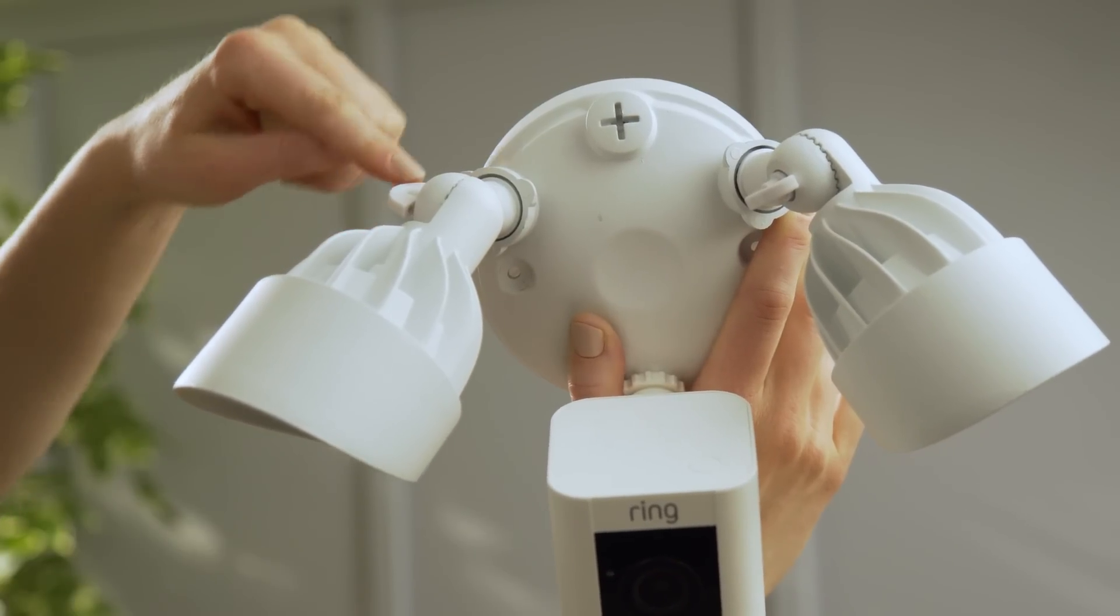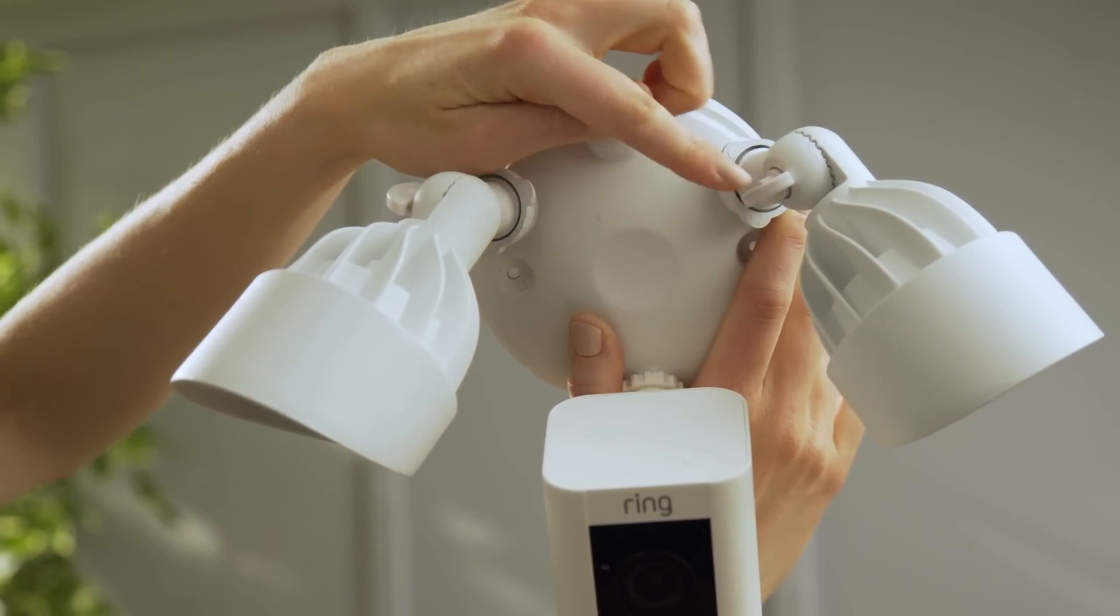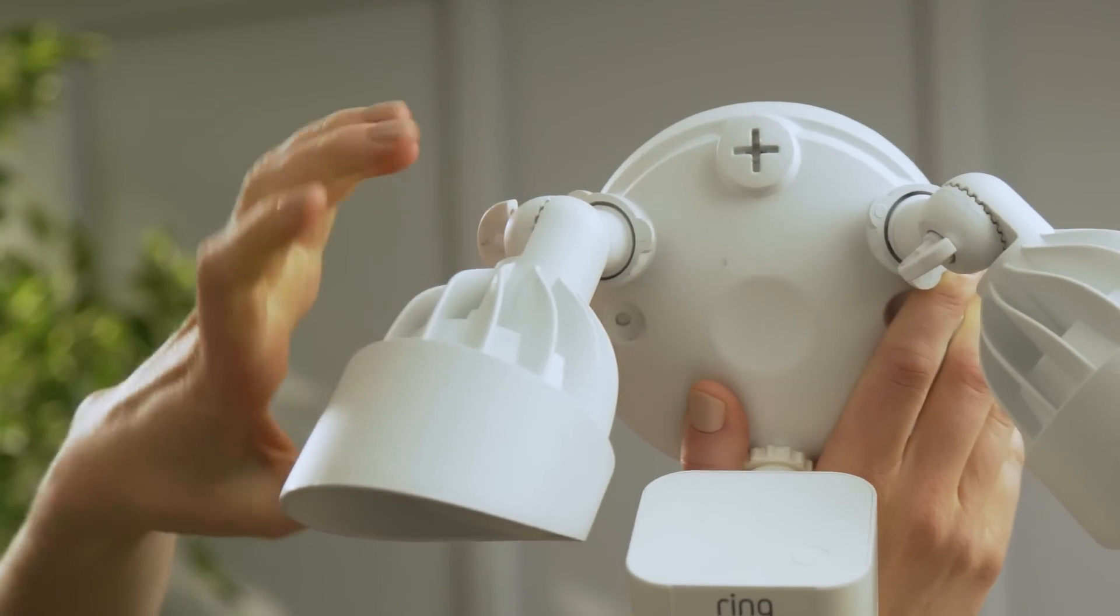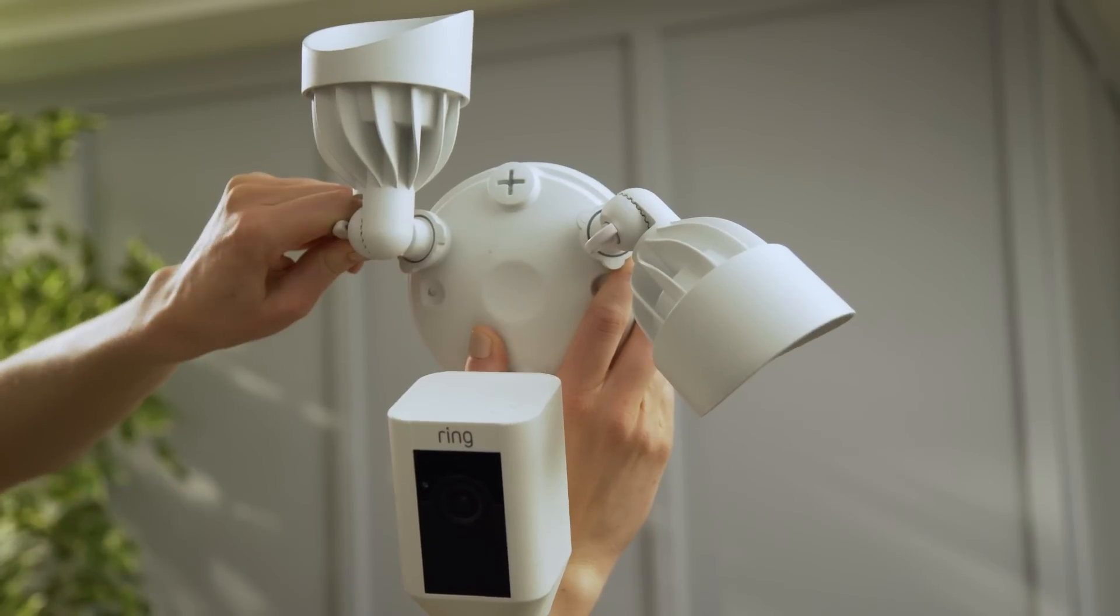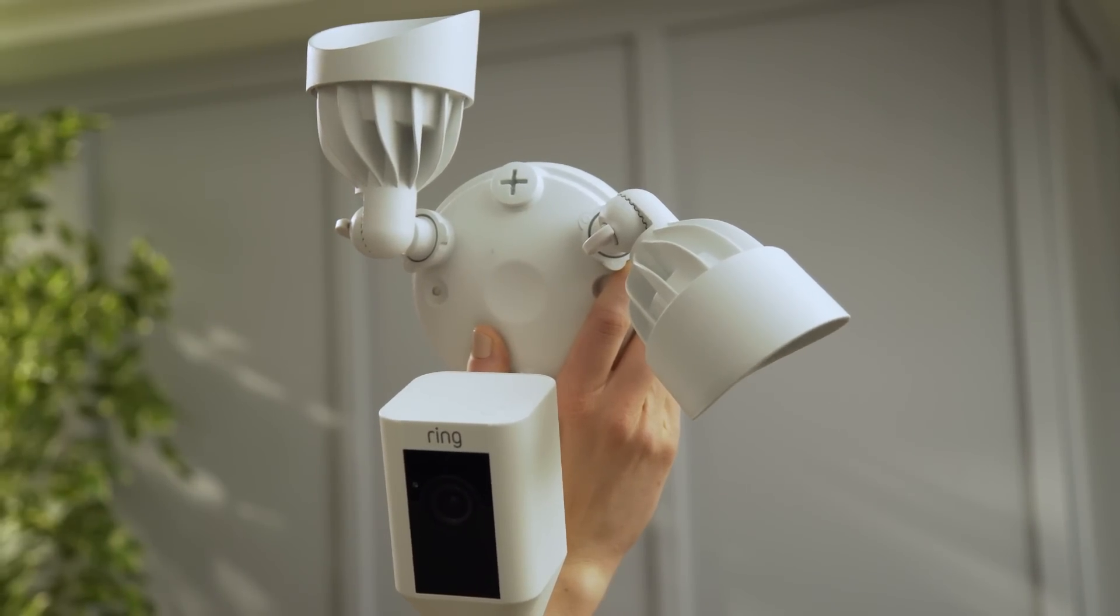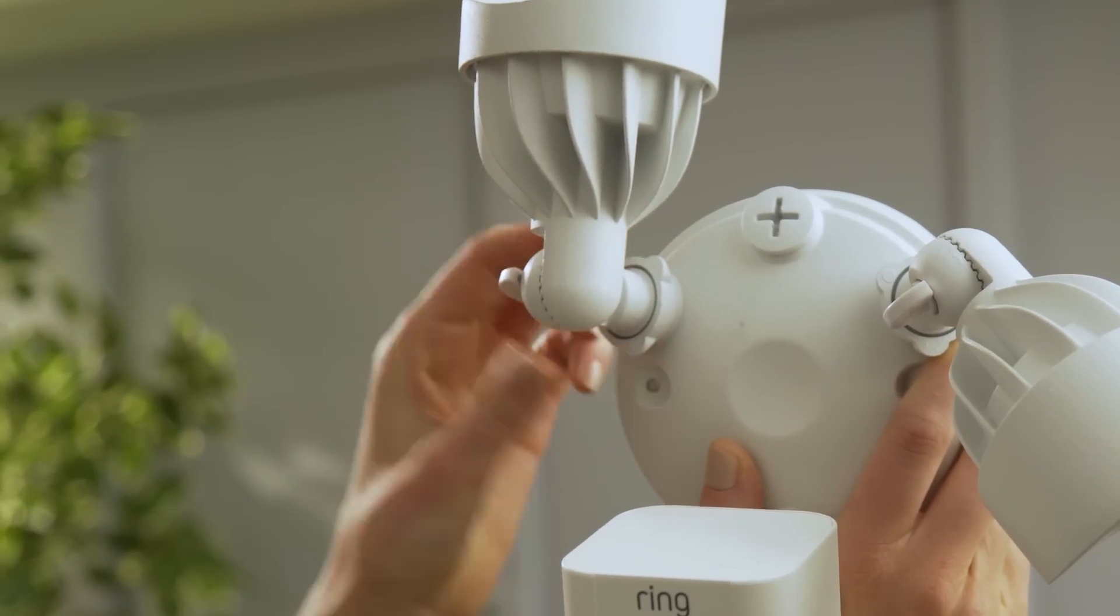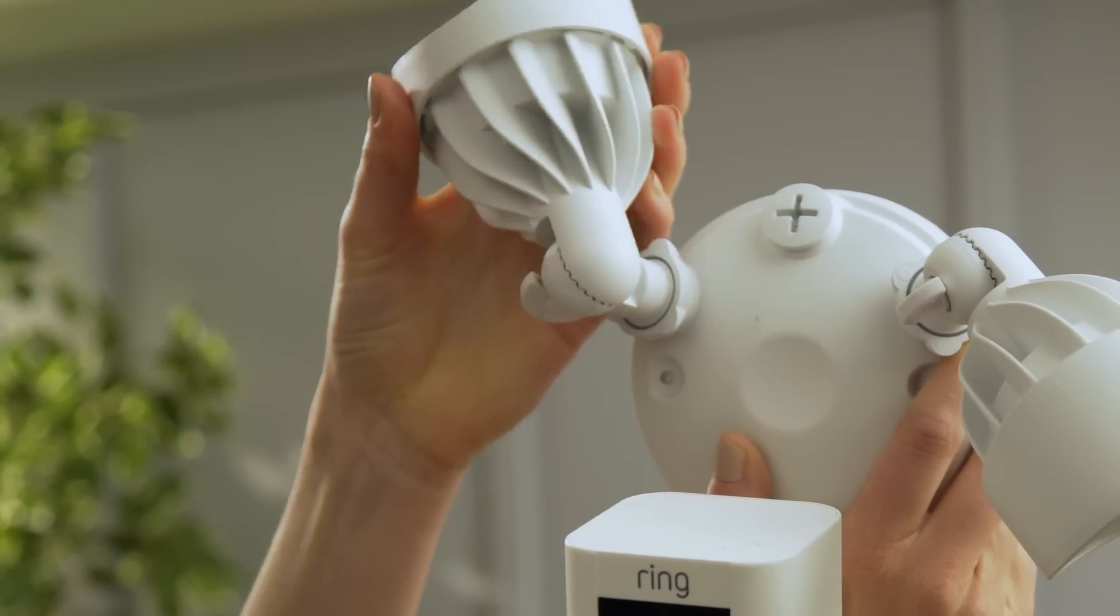These knobs are for adjusting the angle of the lights. Loosen the knobs to point the lights straight up to get them out of the way during installation. You can also loosen and secure the lock collar at the base of the lights after rotating them in your desired direction.